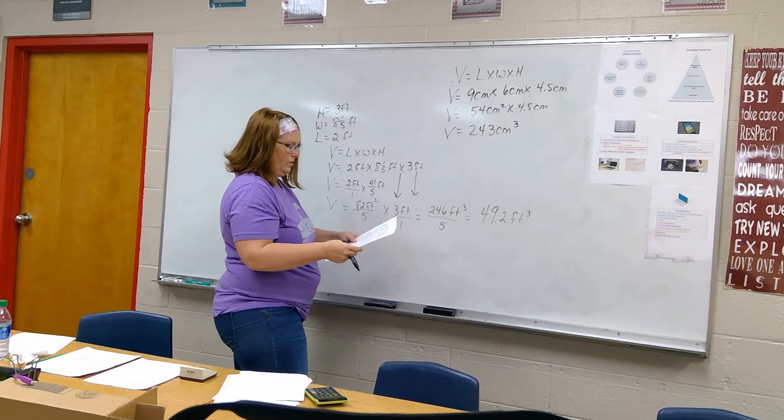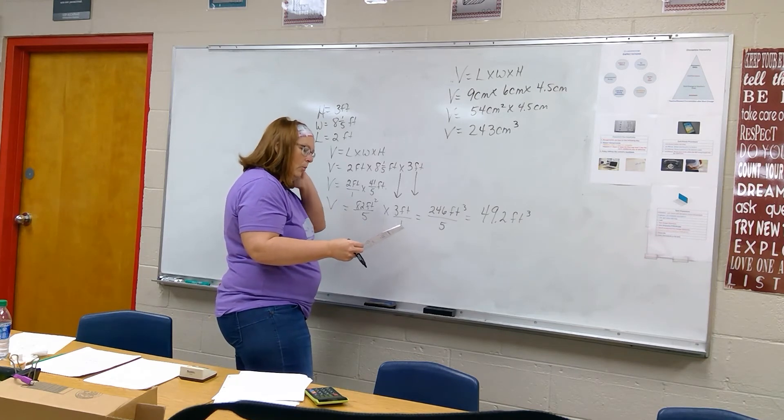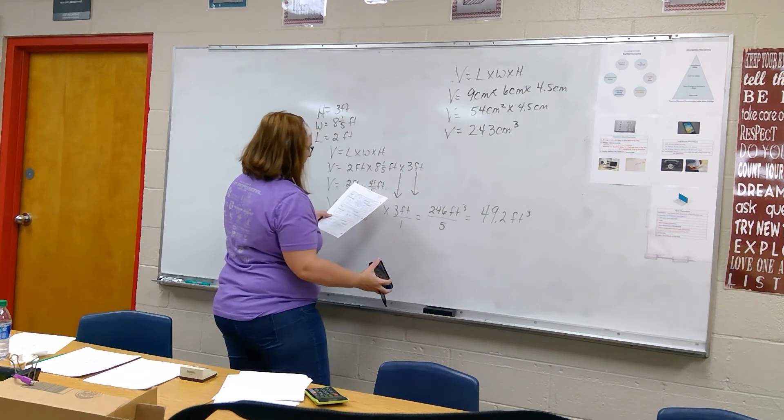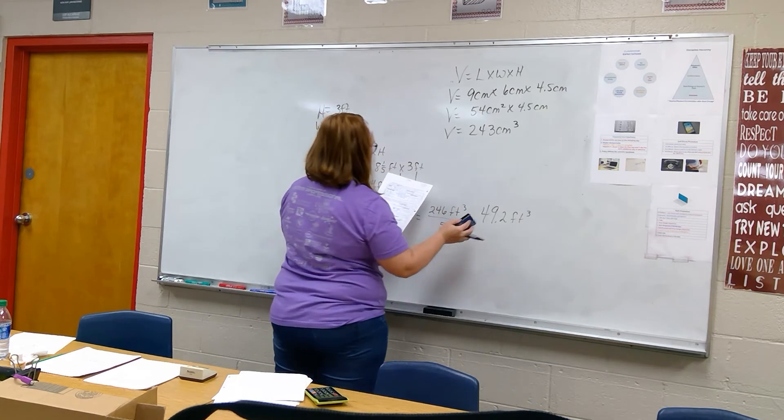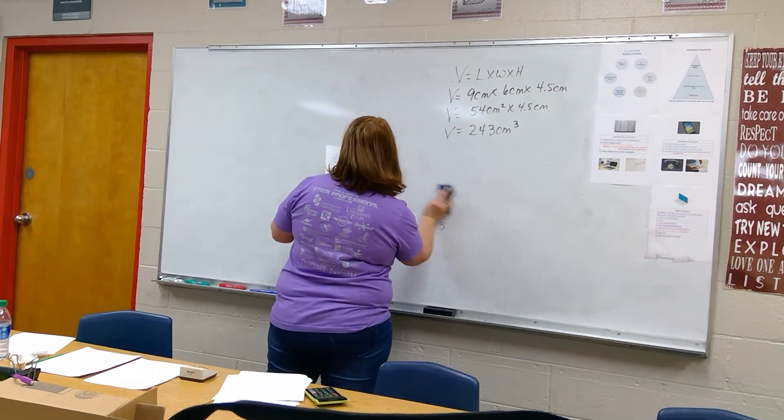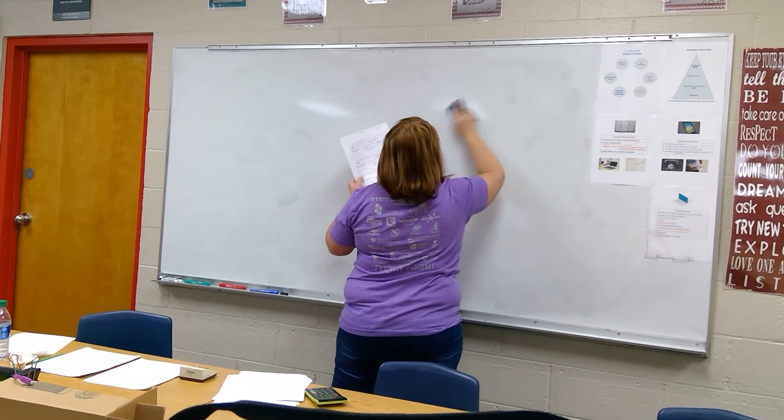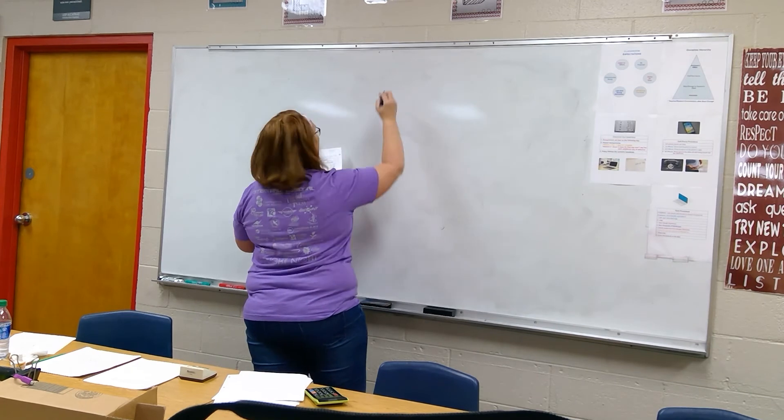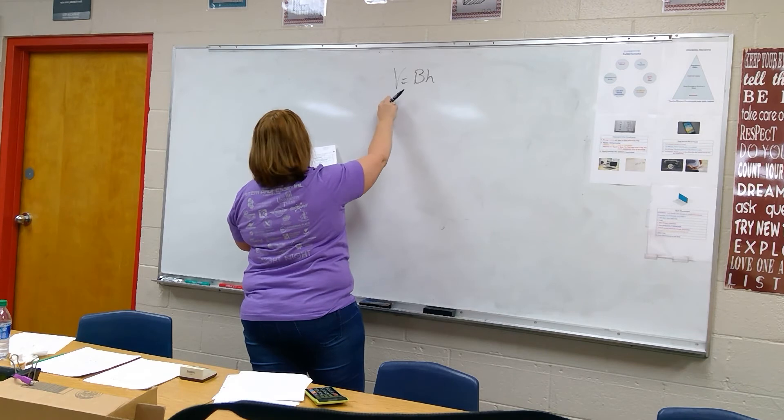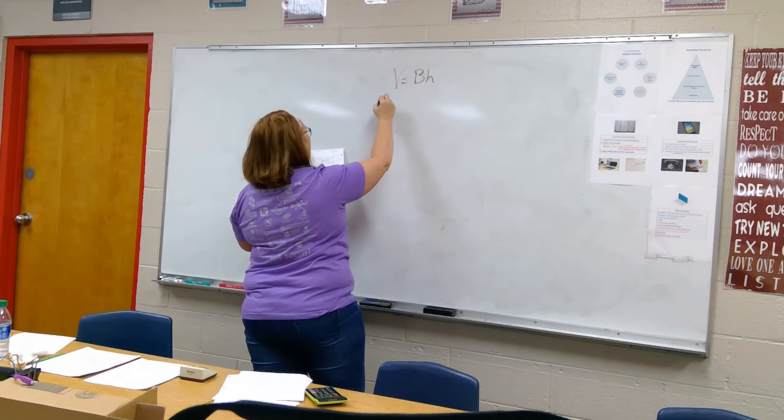And we're going to do the same thing. Says a shipping crate, this time we are going to use the formula volume equals base times height. So on number six, the volume, volume equals they've already given us the volume, so we already know v. Volume equals v times h.